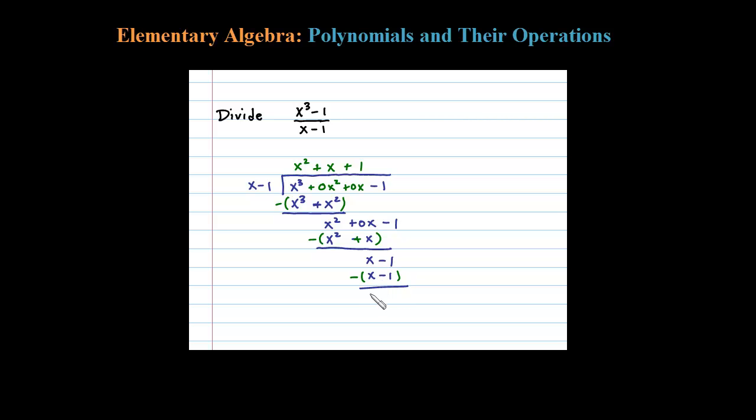So here those are the same, so when I subtract I certainly get 0. x minus x is 0, negative 1 plus 1 is 0, so this goes in evenly. When I divide these two binomials, the result is x squared plus x plus 1. It went in evenly.